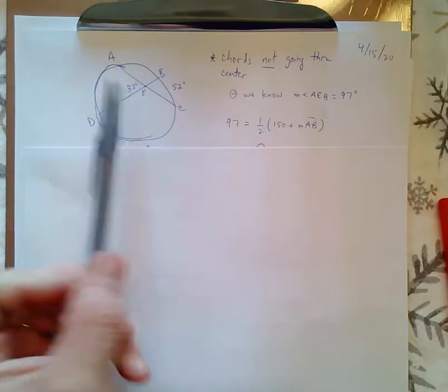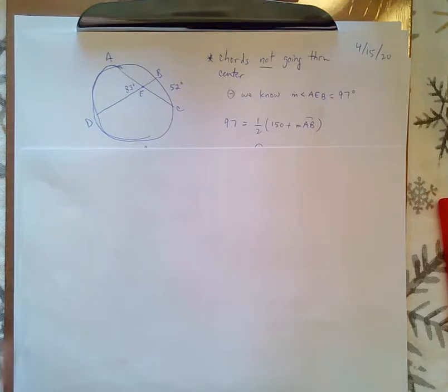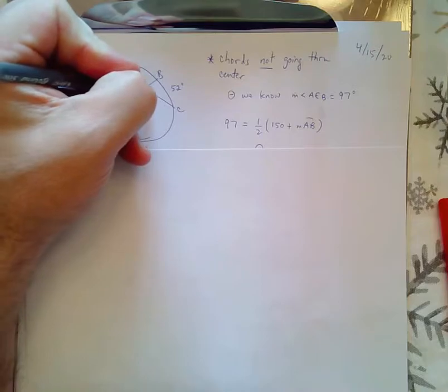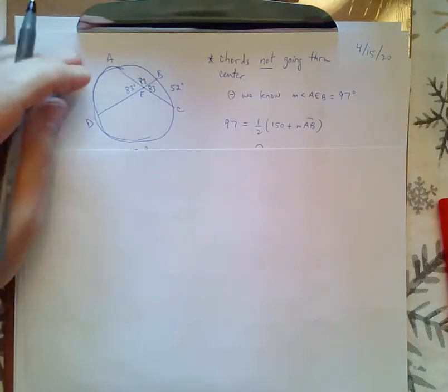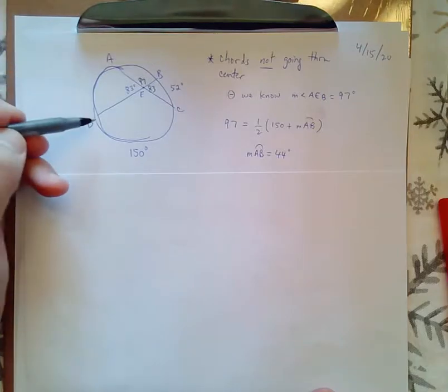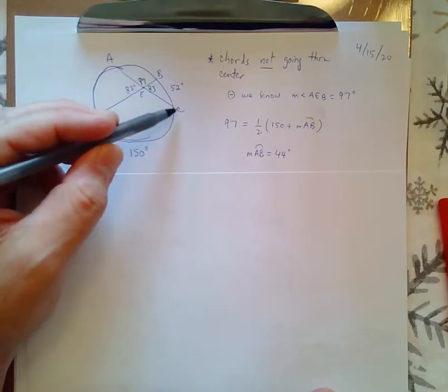This 83-degree angle, we know that the one next to it is 97, and we know that the vertical angle is 83. Now, I'm also given, I just made up this problem, that the measure of arc DC is 150.